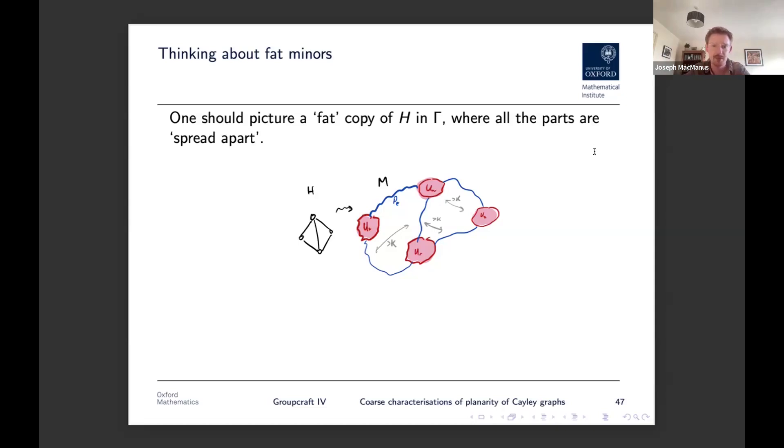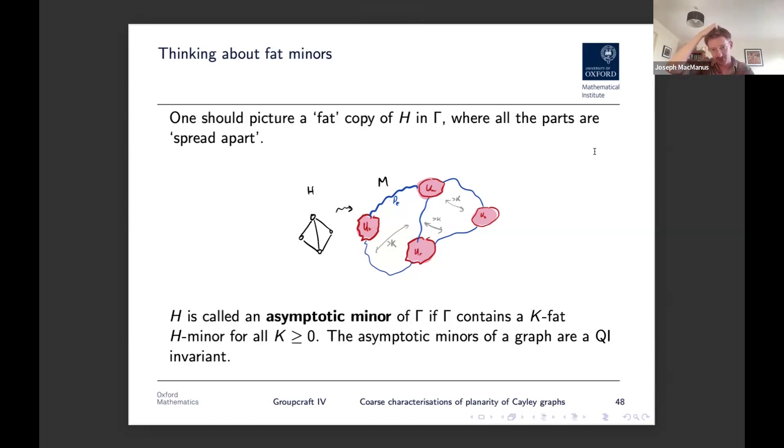Now H is called an asymptotic minor of gamma if gamma contains a K fat H minor for all K. And the benefit of this definition is that the asymptotic minors of the graph are QI invariants. This is kind of easy to show. And so we can start to reason about the asymptotic minors in our group. So let me just talk about a conjecture which was made in the last few years.